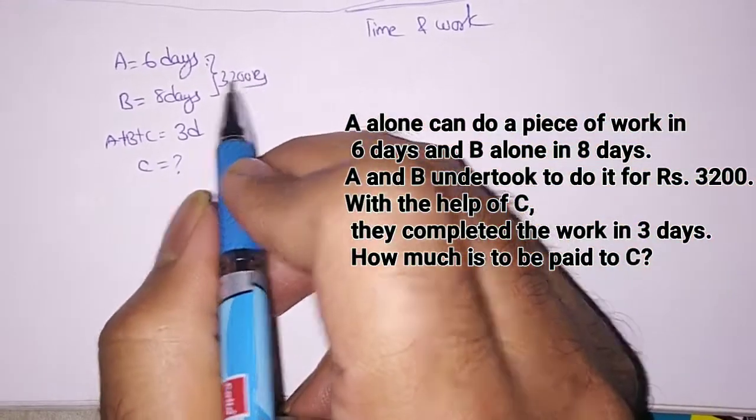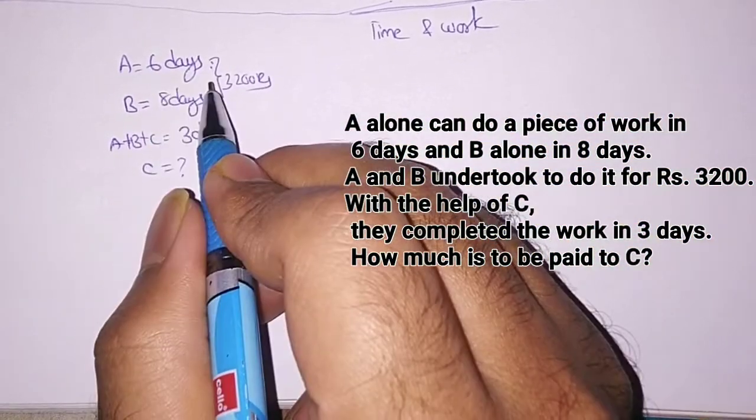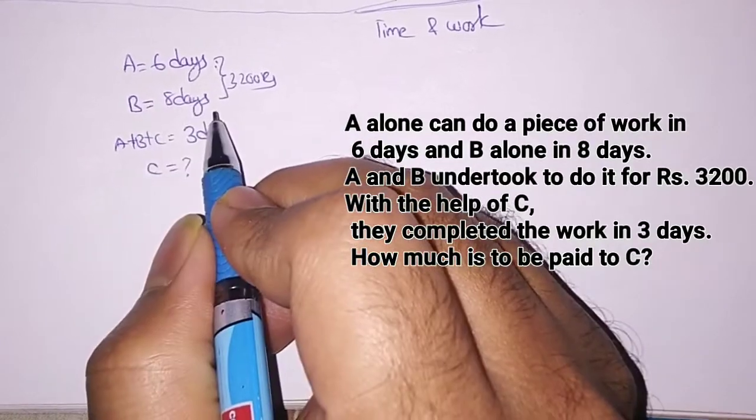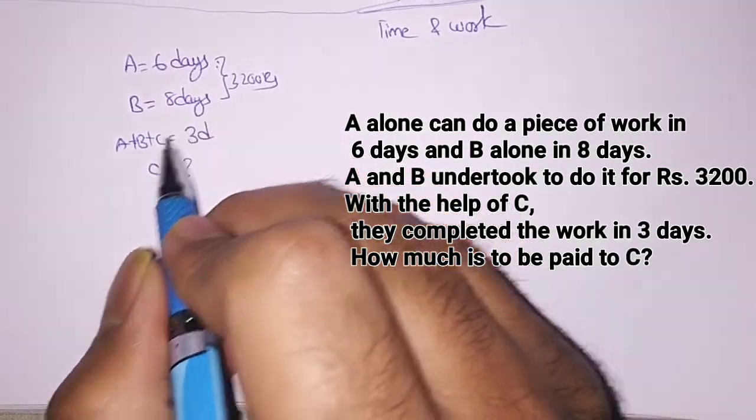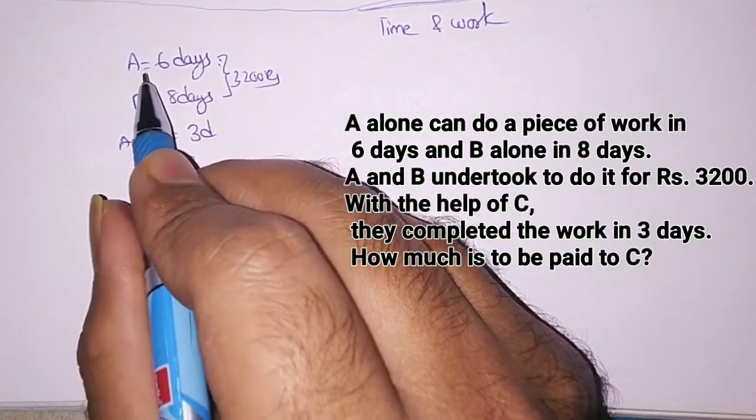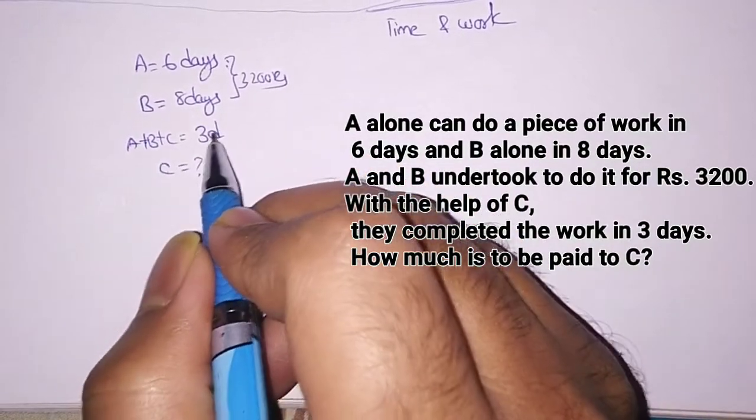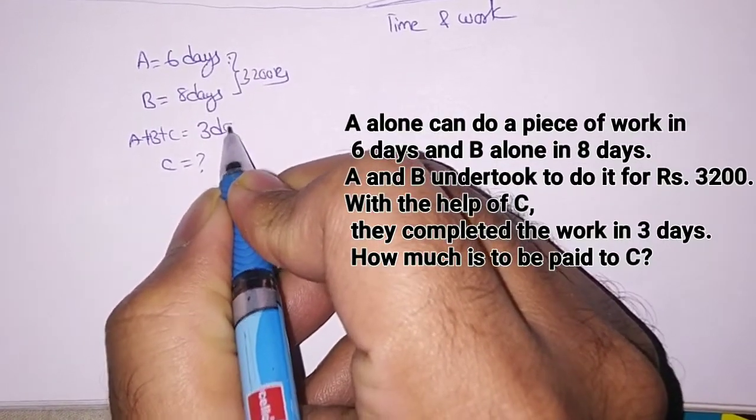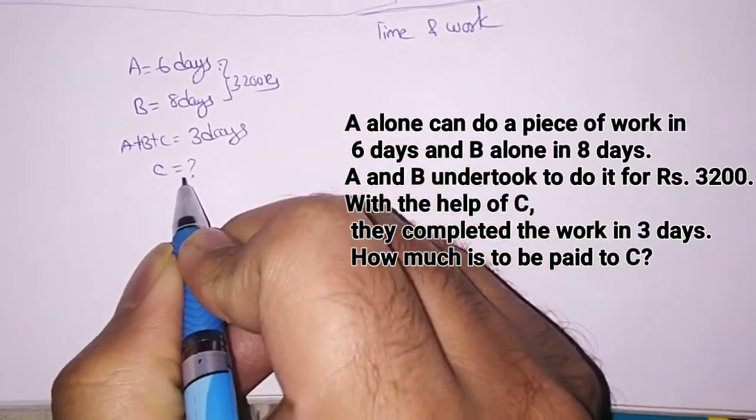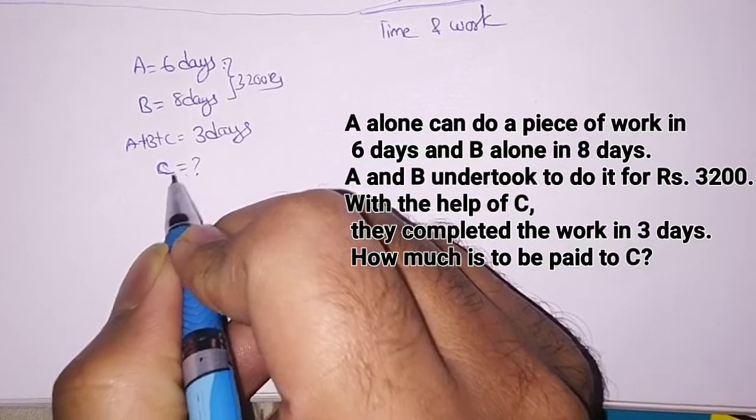So the question goes like this: A can complete a work in 6 days and B can complete a work in 8 days and they together took the work for 3200 rupees. With the help of C, they completed the work in 3 days. So how much is to be paid for C?